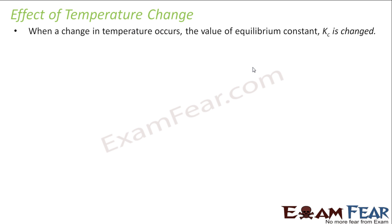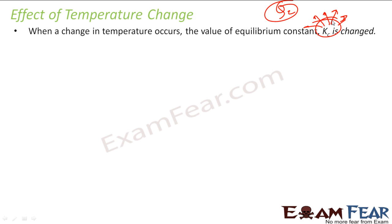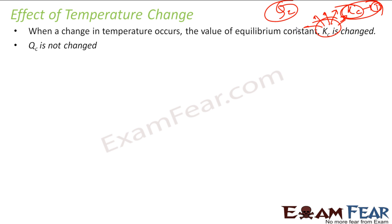Let's talk about the effect of temperature change. Till now we have been changing QC, but temperature change impacts KC. When you give the value of KC, you should also give the temperature. KC is defined at a given temperature, so if you change temperature, KC changes. When you change the temperature, the equilibrium constant itself changes, and thus the equilibrium moves accordingly. Note that QC is not changed in this case — only KC is changed.